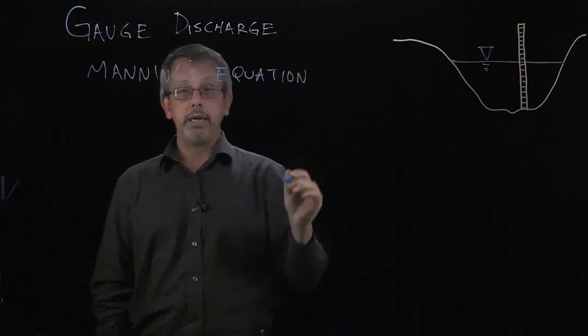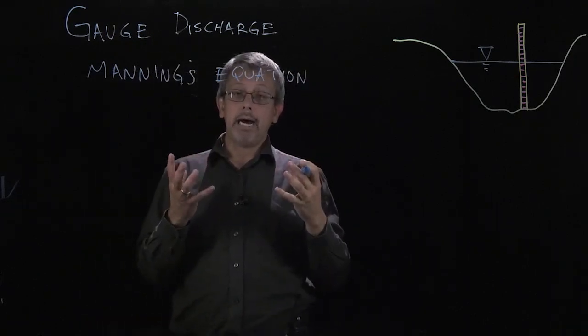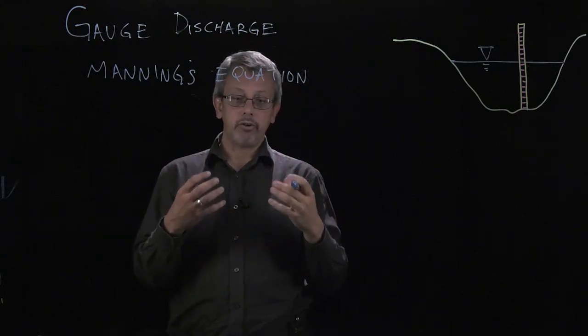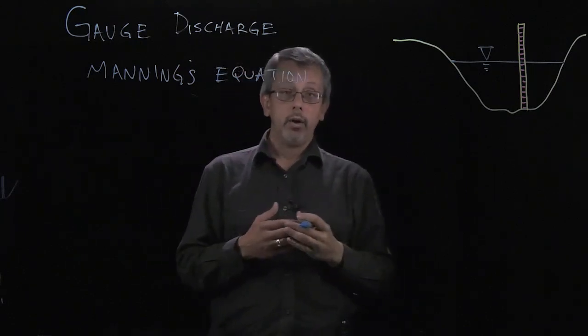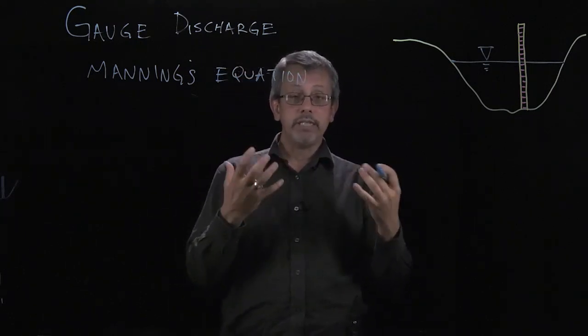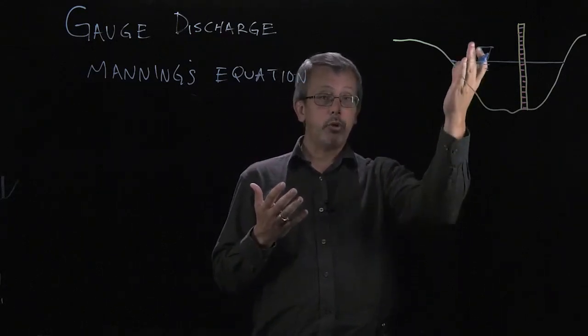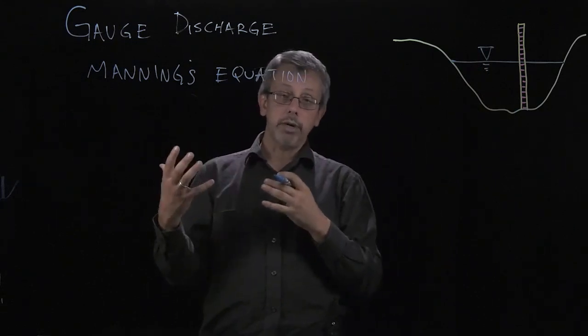And what I mean by empirical, it means that this equation was generated by looking at relationships. It wasn't built up from a series of physical principles like F equals MA, or some other relationships that we know in physics. It was built by looking at some relationships between depth and area and some measurable relationships and the flow, which was also measurable.